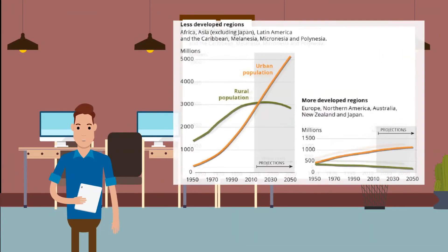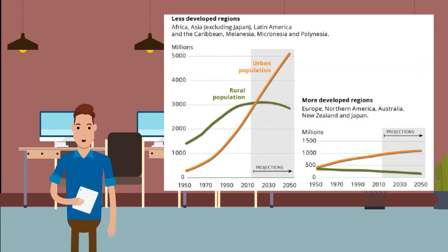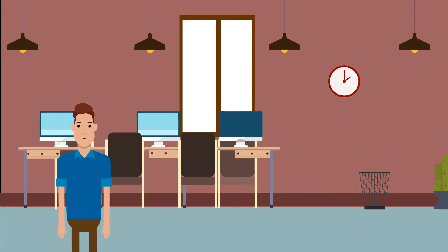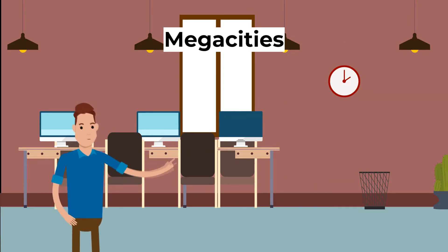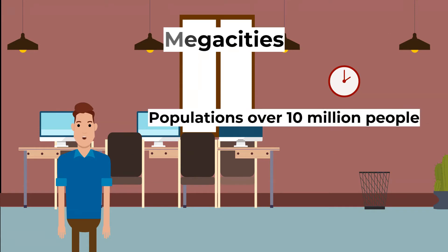The world's urban population is growing and will continue to grow in the future. Urban cities will grow at an accelerated rate in developing countries, whereas the urban population in developed cities will grow more gradually. That brings us to megacities. Megacities are defined as cities with populations of over 10 million people.